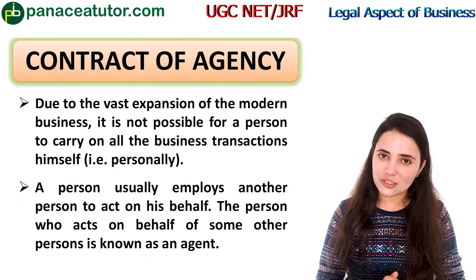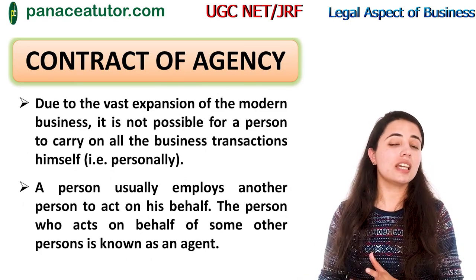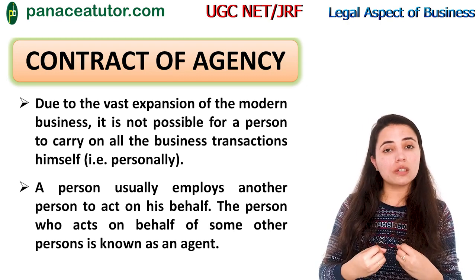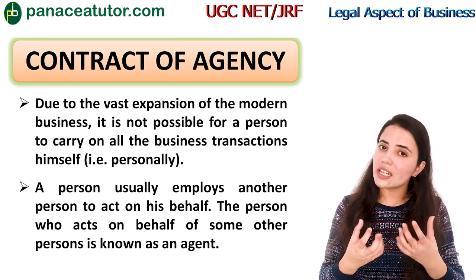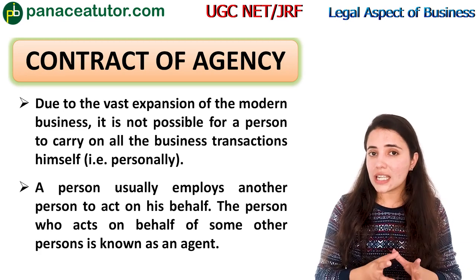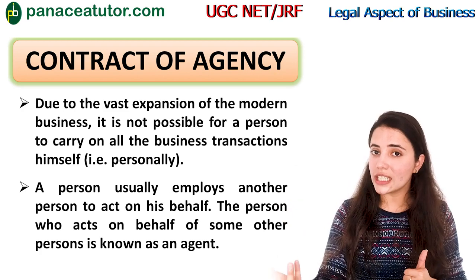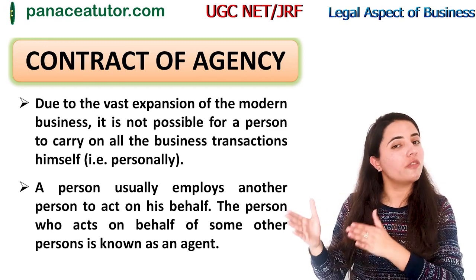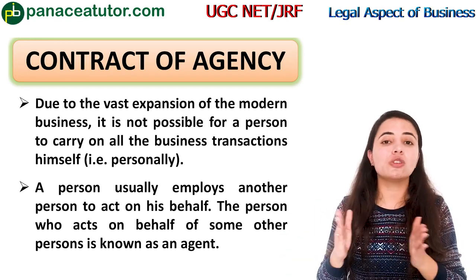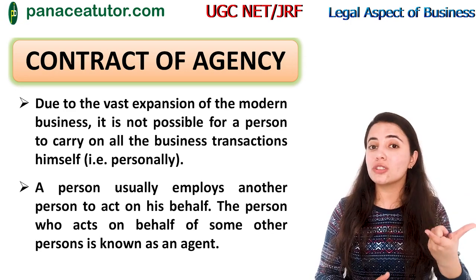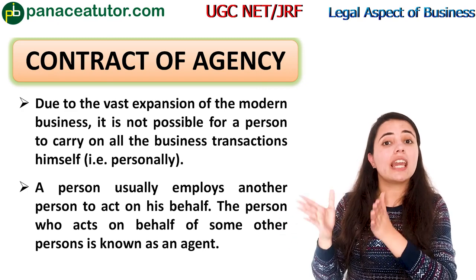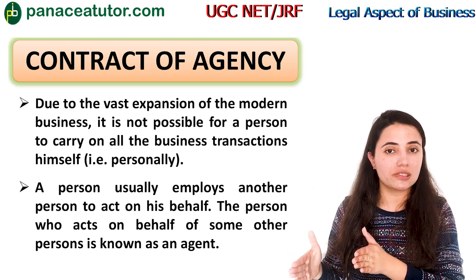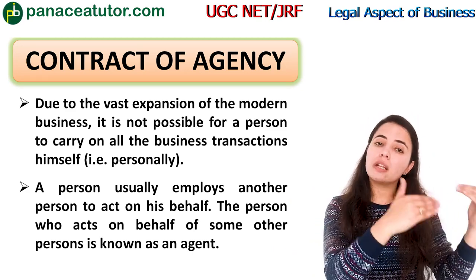Now we will move to our next topic: the contract of agency. Today, businesses have expanded so much that the owner of a business cannot work alone; he works with many people. When the owner gives authority to another person to act as his representative, that is a contract of agency. The main parties are: the principal — who is the real owner of the goods — and the agent, who is the representative of the principal.